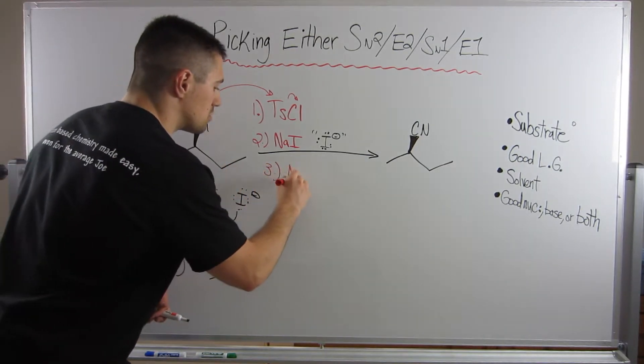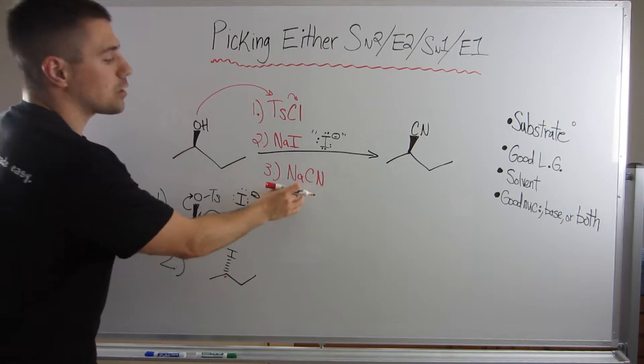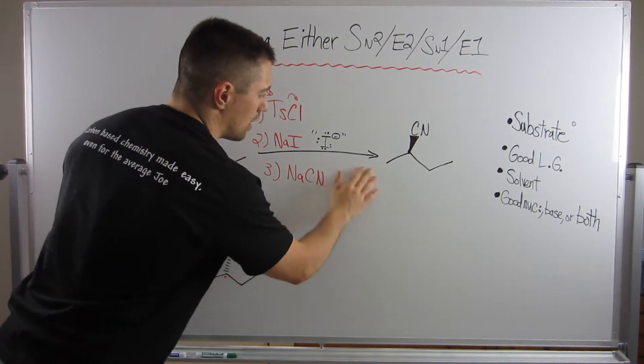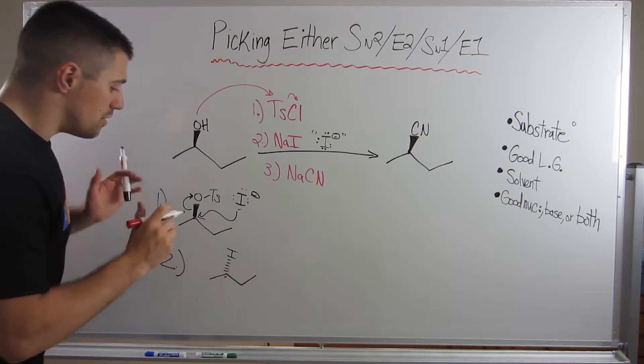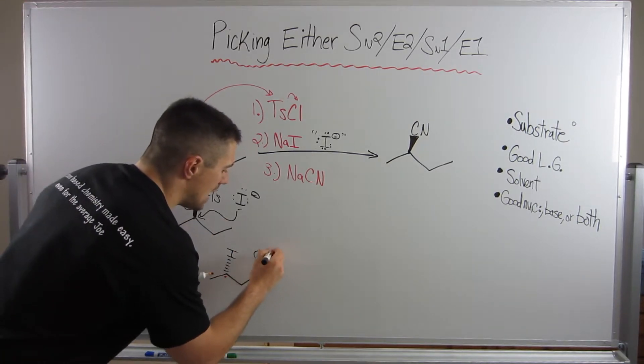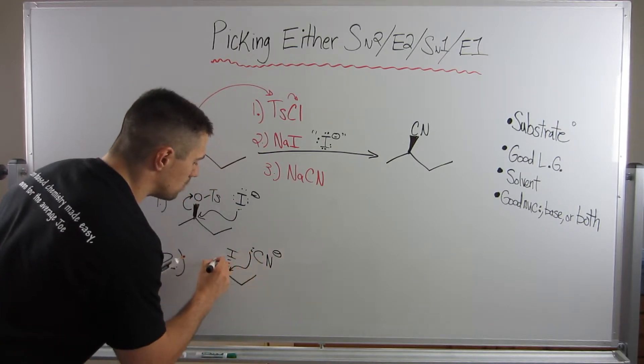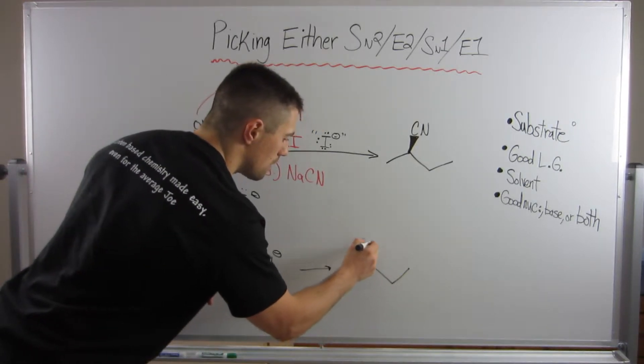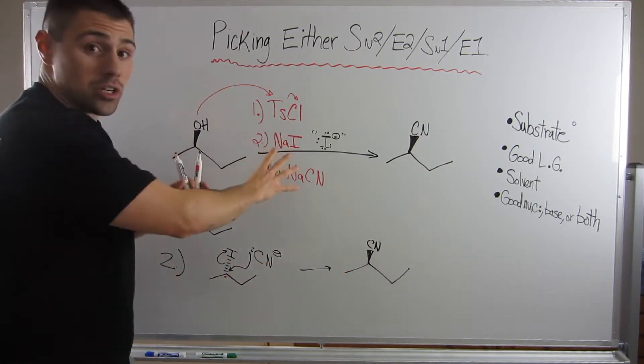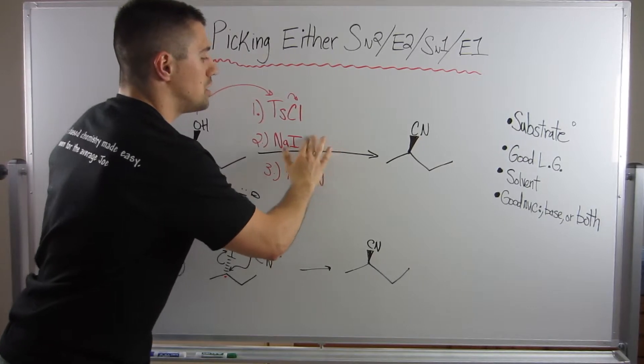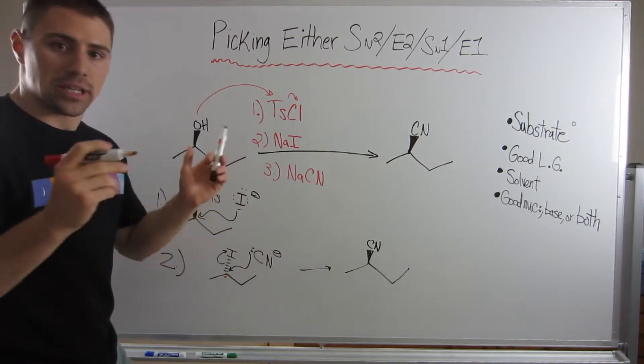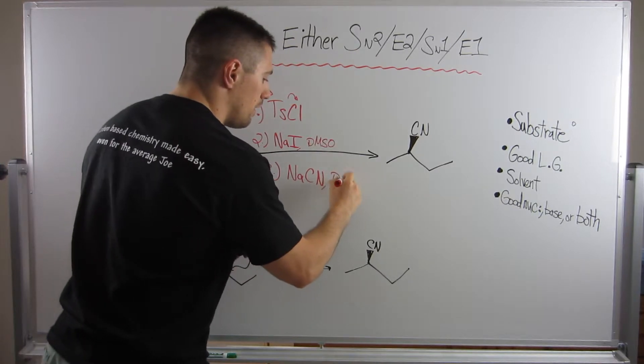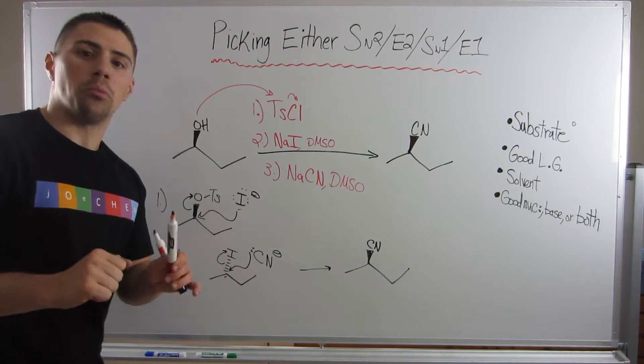So the iodide ion has to come from the back side, so it attaches as a dash. Perfect. So I hope what you're seeing is now we have a good leaving group, and we have the stereochemical configuration we want. The next nucleophile that would come along and attack this stereocenter will attach as a wedge. Well, if we just throw in some sodium cyanide, or it doesn't matter what this ion is, this will be our second attack, and now the cyanide will attach the way we intend it to right here. The back side of this dash is a wedge.